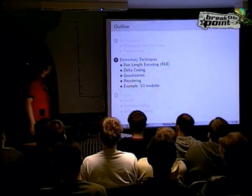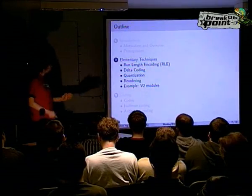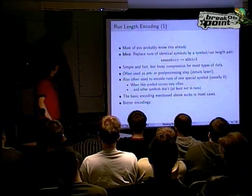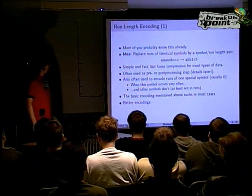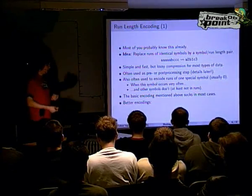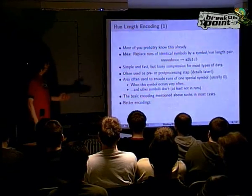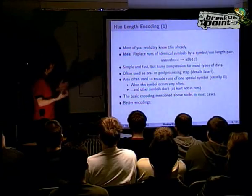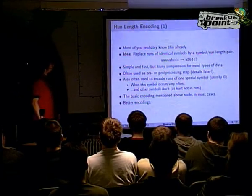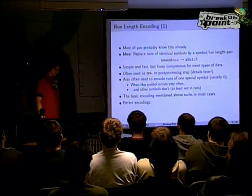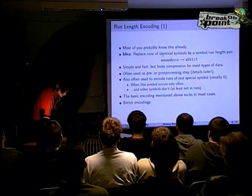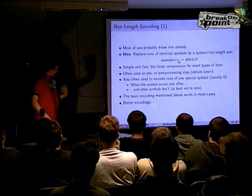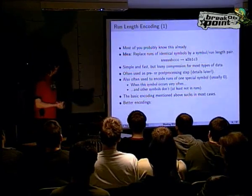For the elementary techniques section: The first one is simply run length encoding, and I think every one of you has already done this. This is the technique that's mentioned first in any data compression text, and most people discover it by themselves. What you do is replace runs of identical symbols with a pair that says how often that symbol appears. For example, aaaabccc becomes 5 As, 1 B, 3 Cs.